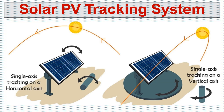Today we are going to discuss solar PV tracking systems. A solar PV tracking system helps increase solar energy production. We always need solar radiation falling on the solar panel at 90 degrees — perpendicular to the panel. If the solar radiation falls perpendicular to the panel, electricity production will be maximum. By changing the tilt angle, we can make that happen.